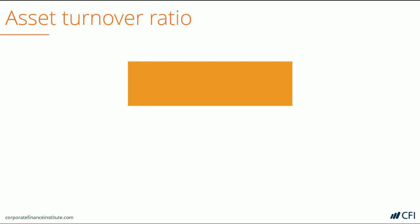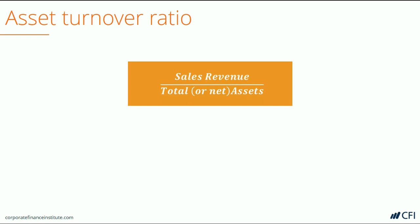Let's take a look at the Asset Turnover Ratio. This metric is important for analyzing a company and requires both the income statement and the balance sheet. The formula is equal to total sales revenue divided by either the total assets or the net assets of the business.